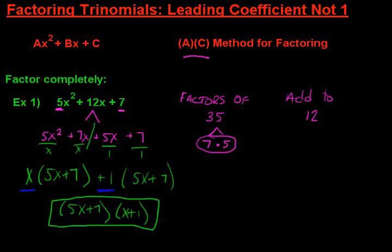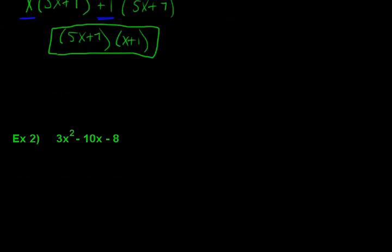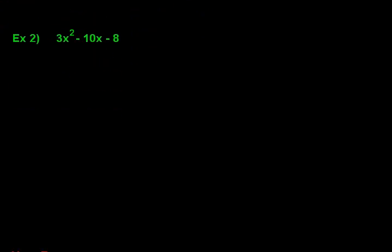Let's look at one more example, and I think when you see this at full speed, you'll get the idea that it's not that daunting of a process once you do a handful of them. So let's try this one. We see here that we're dealing with an A and a C, 3 times negative 8 this time. So we're going to find factors of negative 24, 3 times negative 8.